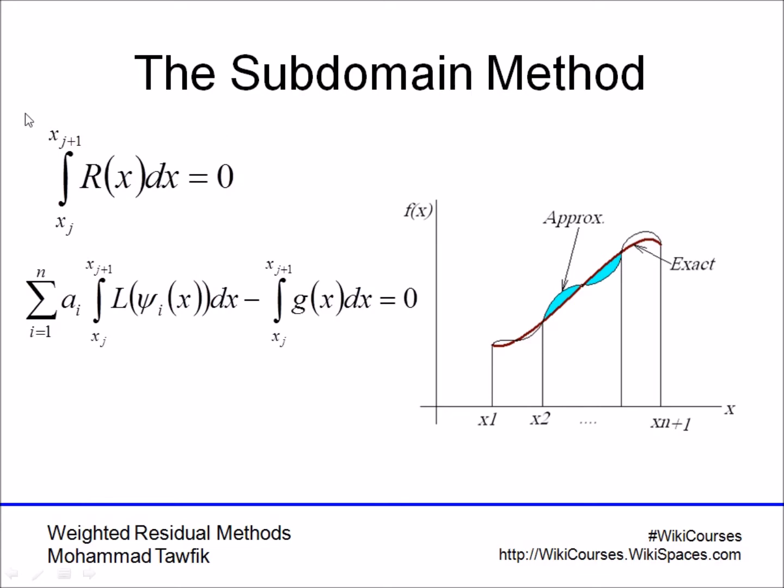And forcing the residue to be equal to zero. So repeating this on different subdomains, from x1 to x2, from x2 to x3, and from xn to xn plus 1, you end up with a number of equations, each of which has the unknown coefficients ai in it, and then you can solve them.